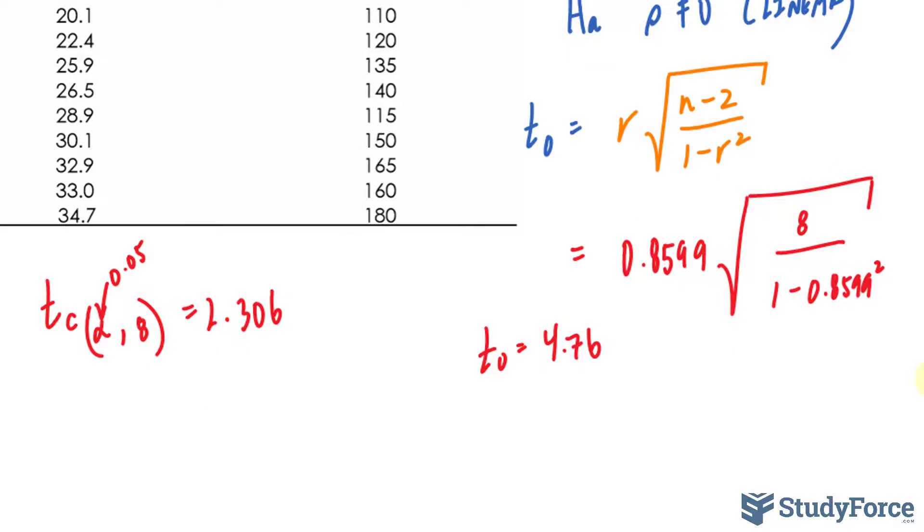And this looks like, on a chart, something like this, where that value is 2.306 and the value that we just found is 4.76. So it falls in what we call the rejection region.